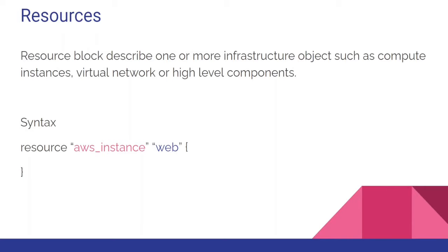Resources are the most important element of Terraform configuration. A resource block describes one or more infrastructure objects such as compute instances, virtual networks, or high-level components. In terms of infrastructure, a resource is an object - for example if you want to provision an S3 bucket or EC2 instances, the resource represents that object. There is a certain syntax you have to follow when writing a resource block in HCL.